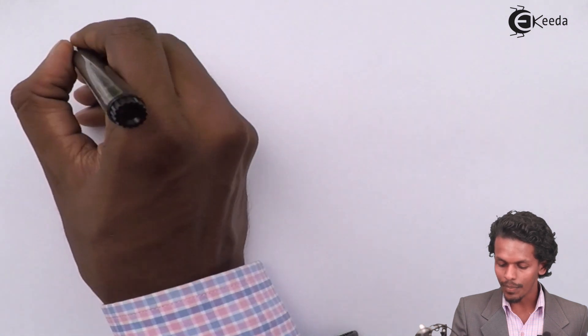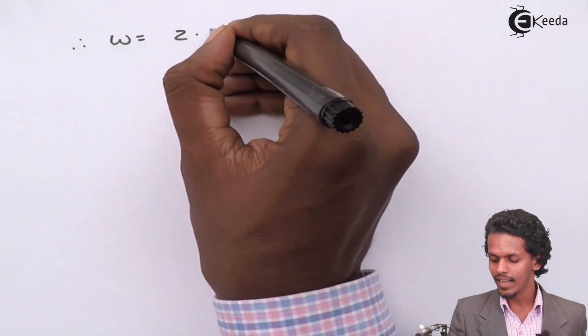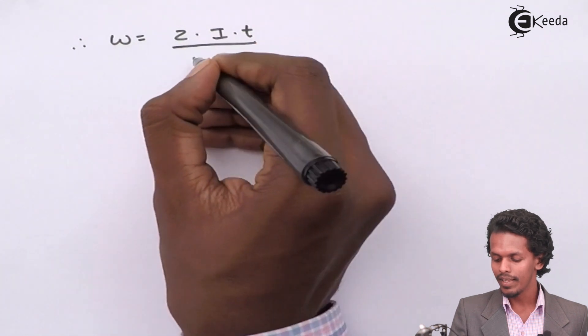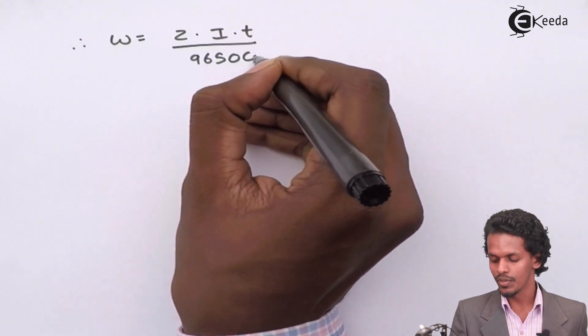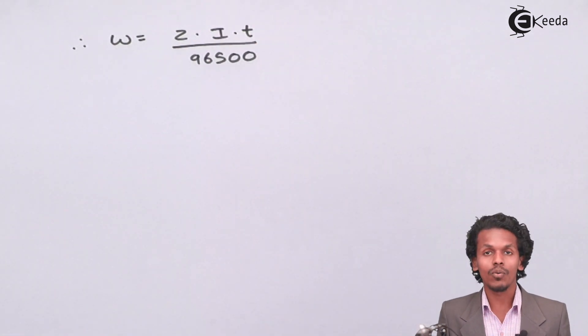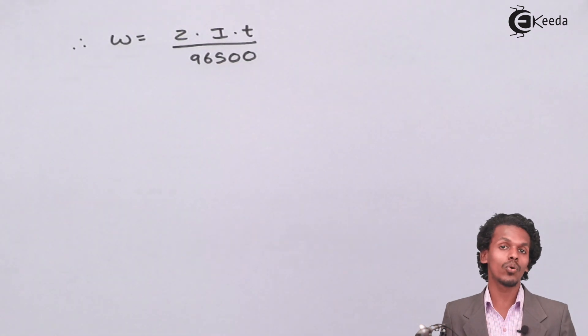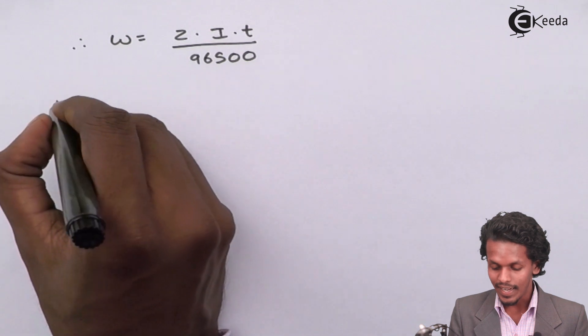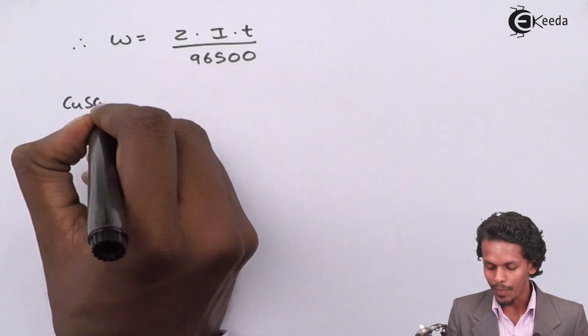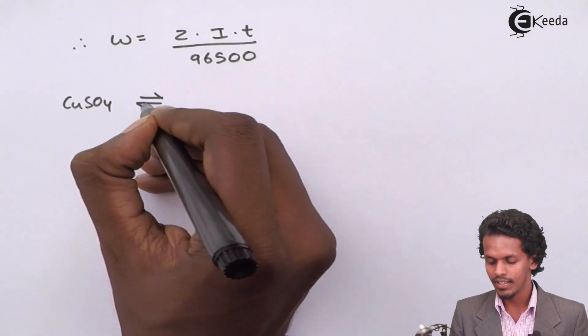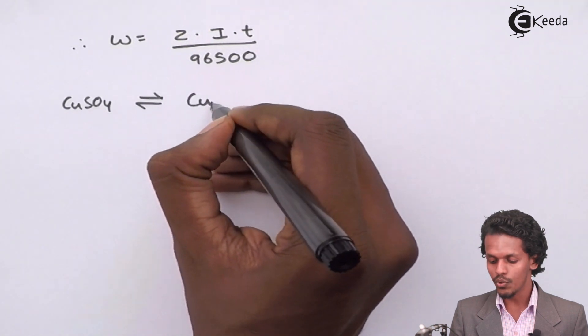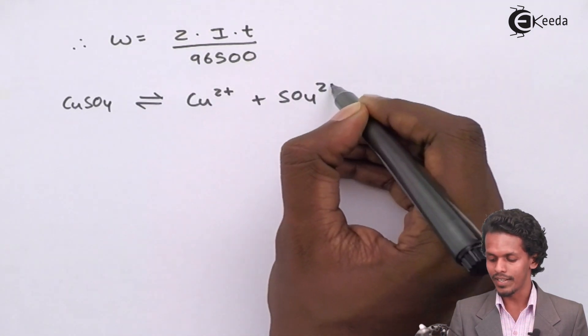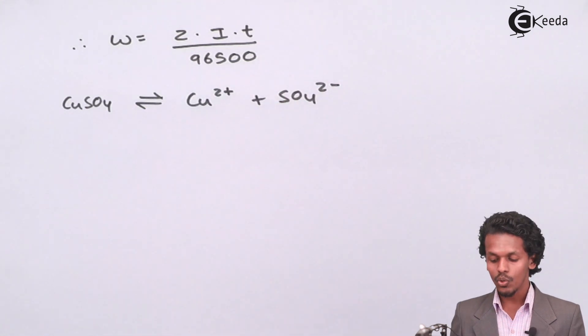For that, we know the formula W = ZIT / 96500. But before evaluating what would be the value of I, we don't know what is the value of Z. So we know that for copper sulfate, copper sulfate gets dissociated in the form of Cu^2+ + SO4^2-. Therefore, the valency of the copper is 2.